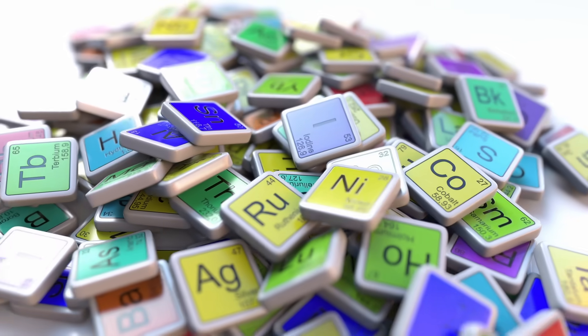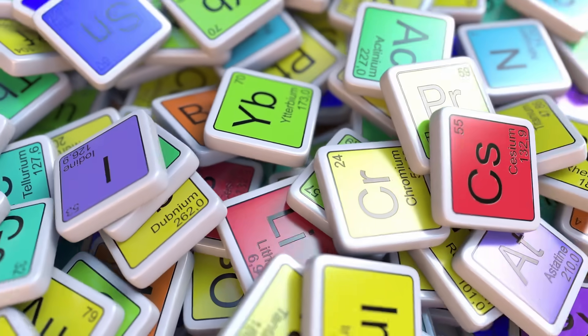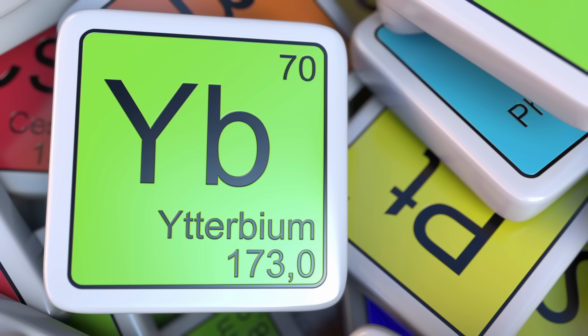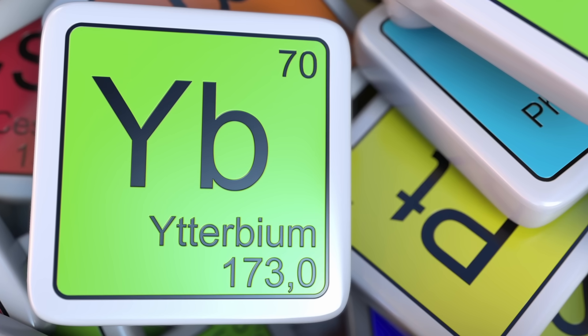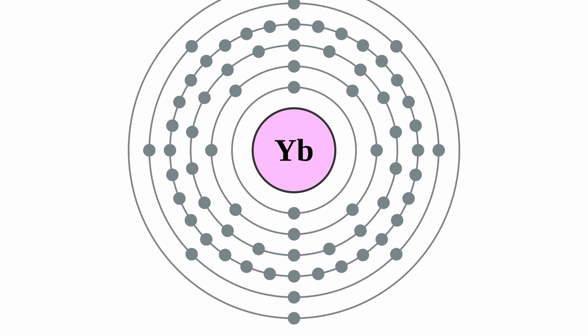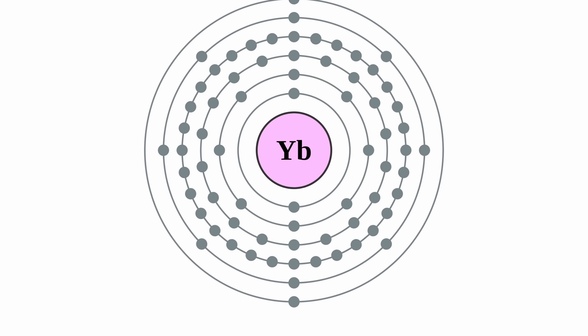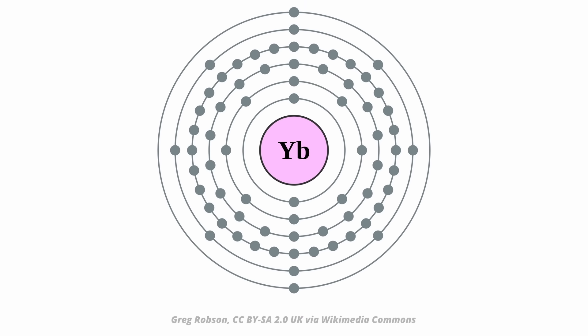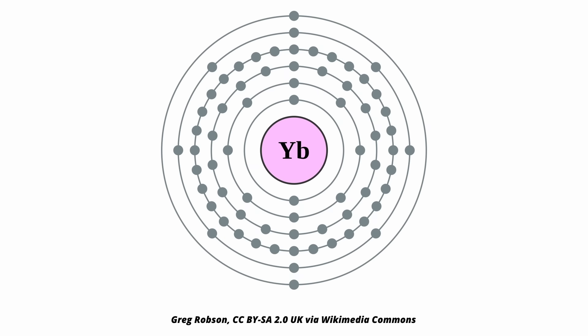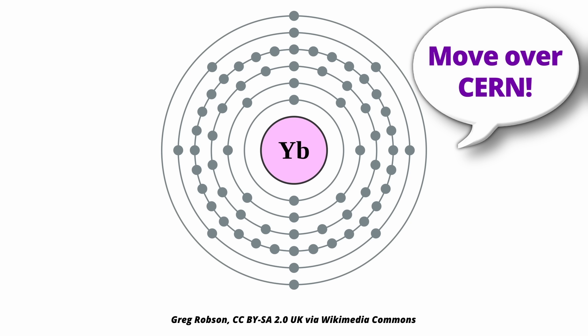You may wonder now, well, but why then have we only seen it in Ytterbium and not elsewhere? The reason has not to do with the boson, but with Ytterbium. This particular chemical element just so happens to be extremely sensitive to any sort of interactions at nuclear scales. It's quite plausible that if such a boson exists, you'd see it first in such an experiment.